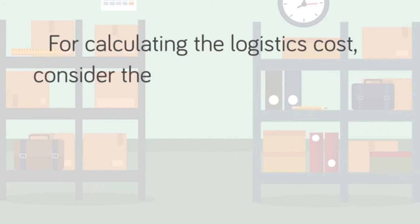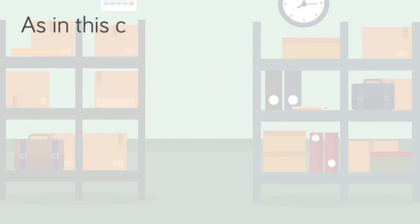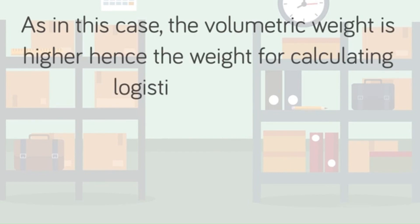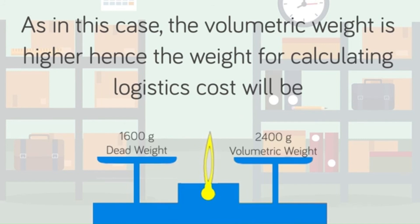To calculate logistics costs, whichever dead weight or volumetric weight is higher, that weight is only considered. In this case, volumetric weight is higher, then we will only consider volumetric weight to calculate logistics cost, which is 2400 grams or 2.4 kilograms. With this we have completed steps to calculate dead weight or volumetric weight of a package.